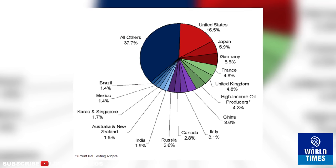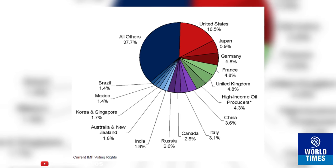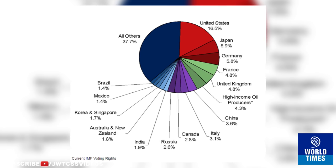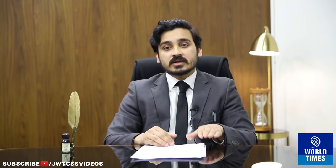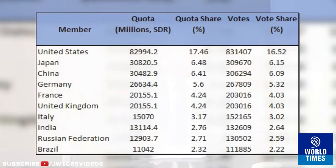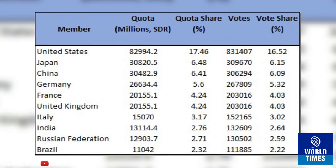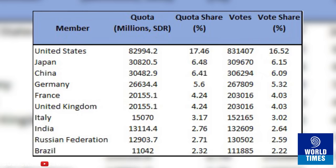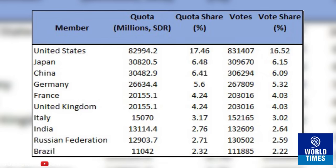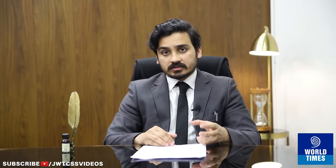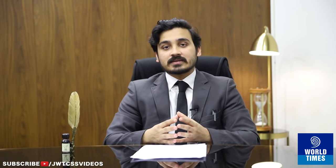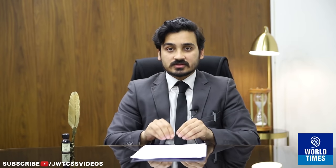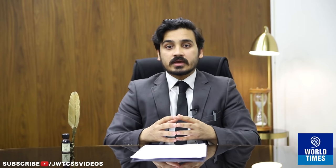The United States holds 17% of the total funds provided to the IMF — the US alone provides 83 billion dollars. The industrialized G8 economies — Canada, UK, US, France, Germany, Italy, and others — together hold 50% of the voting rights. This highlights that within this organization, the asymmetry of power is not very democratic.